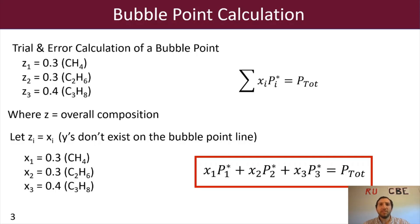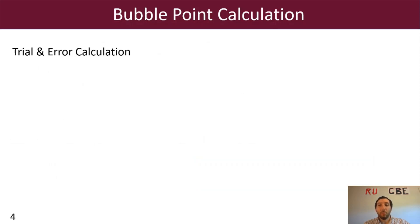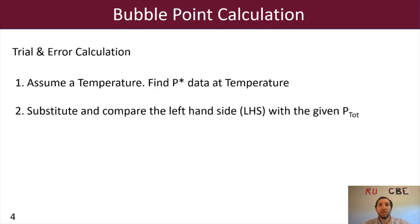Now, what do we do with this equation? So we're going to do a trial and error calculation, where step one, we will assume a temperature, and we're going to do that to find a P star at that given temperature. The next thing we'll do is substitute and compare the left-hand side of that equation with the given P total. So the left-hand side was x_1 P_1 star plus x_2 P_2 star plus x_3 P_3 star equals P total. We're going to compare the left-hand side with P total. And what we will do is compare them, and if they do not match, we are going to adjust the temperature until both sides are equal. Once we do that, we will then have found our bubble point temperature.